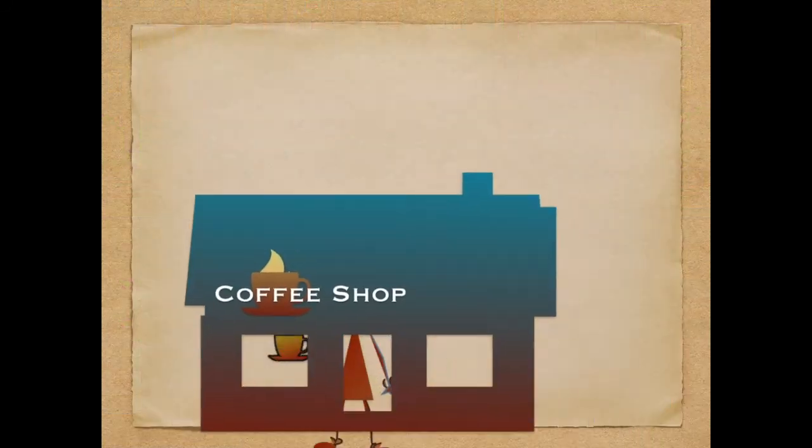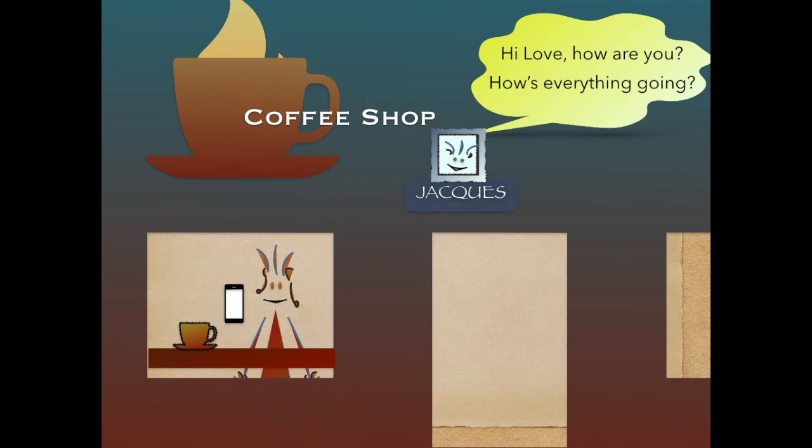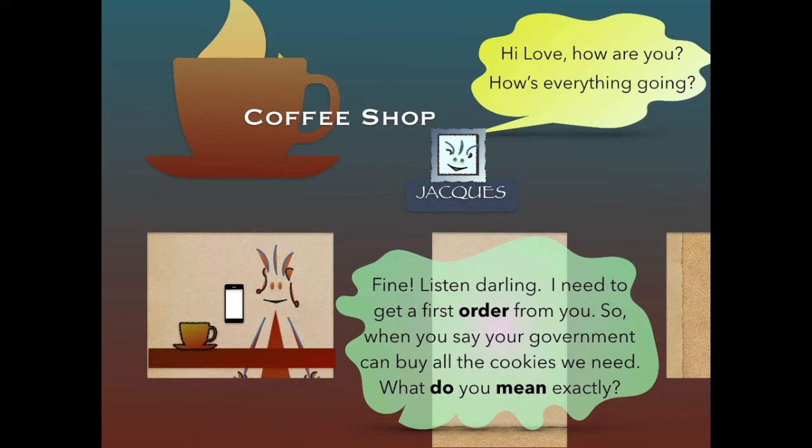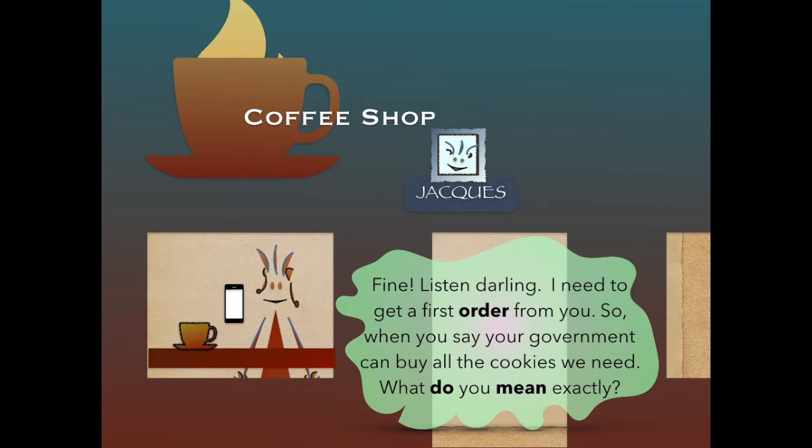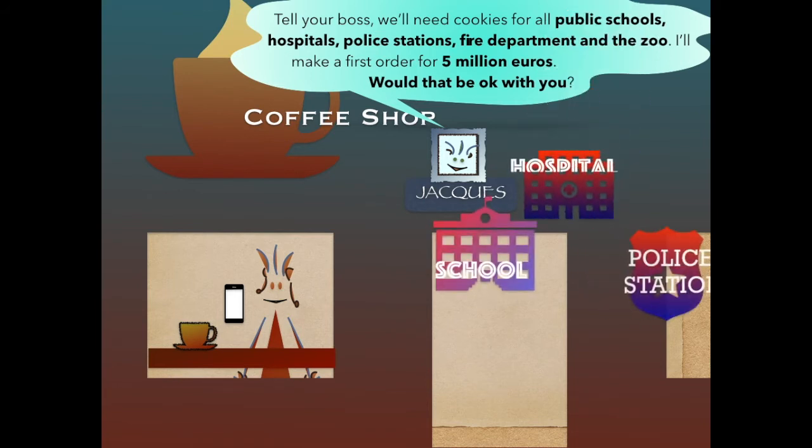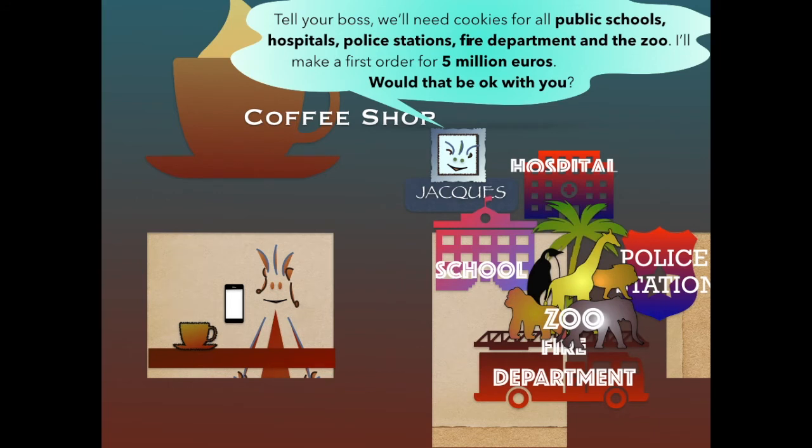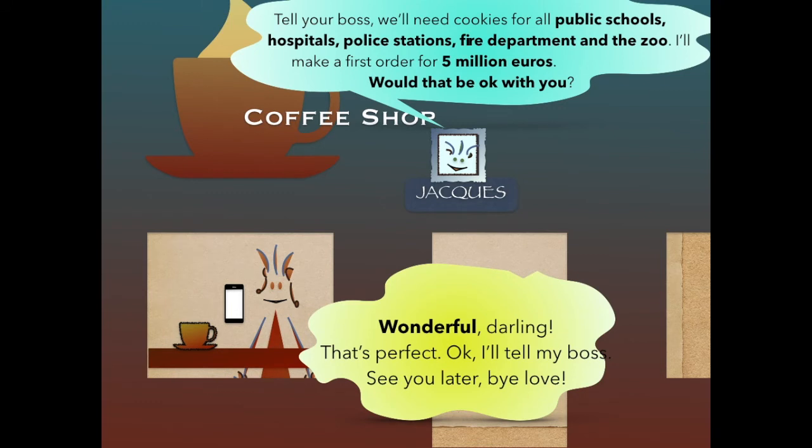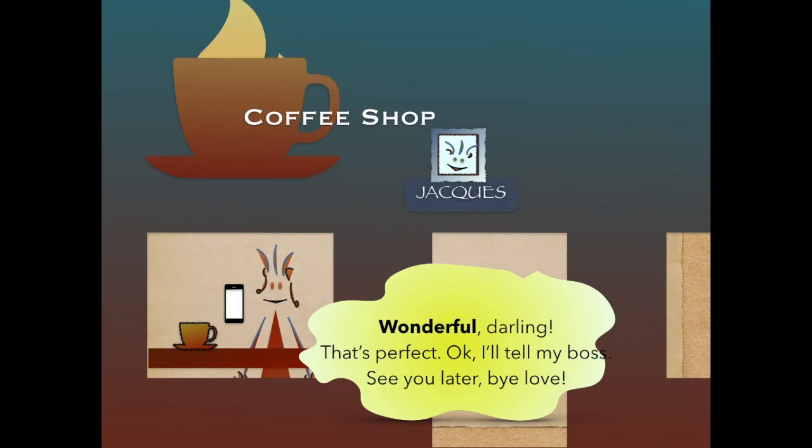Suddenly, her phone rings. It's Jack. 'Hi love, how are you? How's everything?' 'Hi darling, listen, I need to give Eric an answer. Look, I won't get my promotion or pay rise until your government makes a first order. So when you say your government can buy all the cookies we need, what do you mean exactly?' 'Tell your boss we'll need cookies for all public schools, hospitals, police stations, fire departments, and the zoo. I'll make a first order for, let's say, 5 million euros worth of cookies. Would that be okay with you?' 'Wonderful darling, that's perfect. Okay, I'll tell my boss. Oh, I'm sorry, I need to go now. See you later love, bye.'